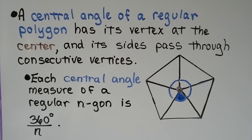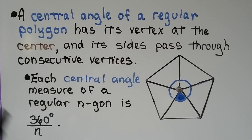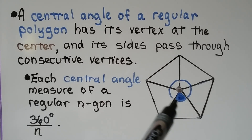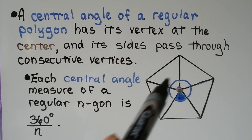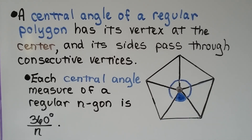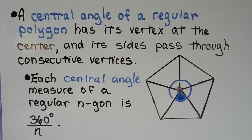A central angle of a regular polygon has its vertex at the center and its sides pass through consecutive vertices. Each central angle measure of a regular n-gon is the quotient of 360 degrees and n, the number of sides. The central angles together make a circle, that's why we've got 360 degrees, and we divide by how many sides there are.